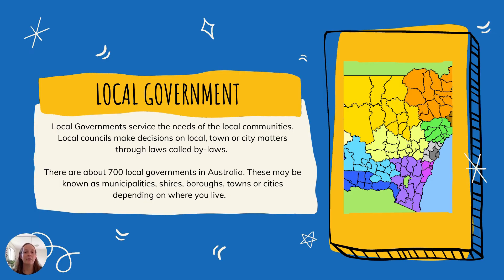So when we think about local government, they meet the needs of the local communities. Local councils make decisions on local town or city matters through laws called bylaws. There are about 700 local governments across Australia, and these may be known as municipalities, shires, boroughs, towns, or cities, depending on where you live.